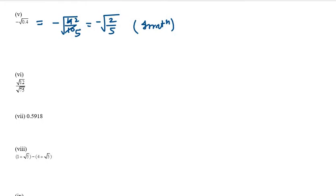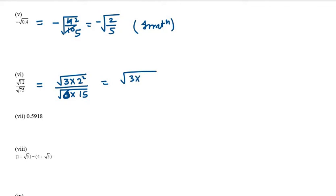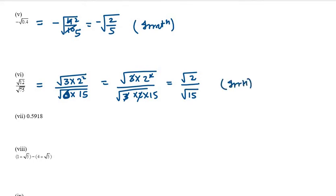Next is √12 over √75. Let's simplify: √12 can be written as √(3 × 2²), and 75 can be written as 3 × 25, or 3 × 2 × ... we can write it as 3 × 2 × 15. The 3s cancel, giving √2 at the numerator and √15 at the denominator. So this is a rational number.